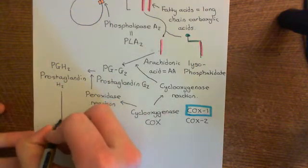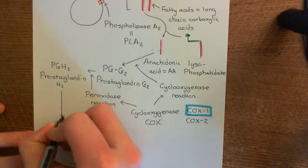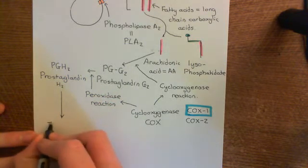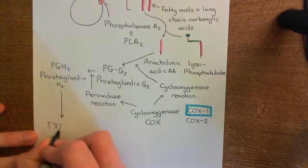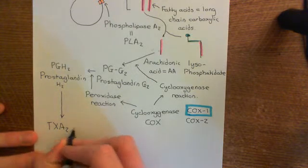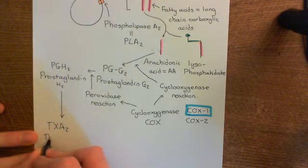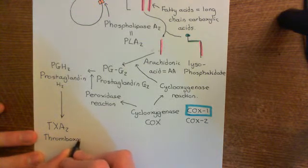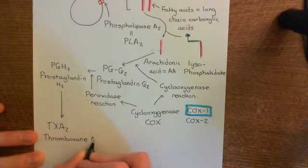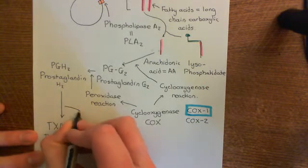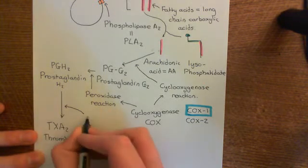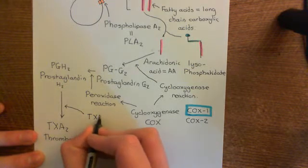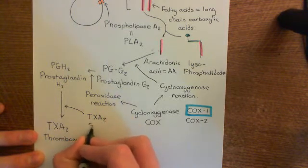Prostaglandin H2 is then going to be converted into thromboxane A2 by the enzyme thromboxane A2 synthase, also referred to as TXA2 synthase.